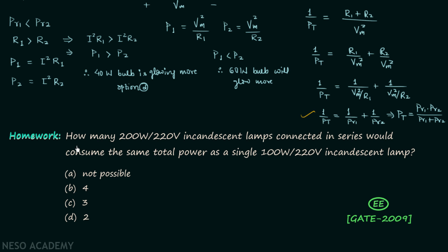As a homework problem, find how many 200 watt, 220 volt incandescent lamps connected in series would consume the same total power as a single 100 watt, 220 volt incandescent lamp. Try to solve this question and post your answer in the comment section.